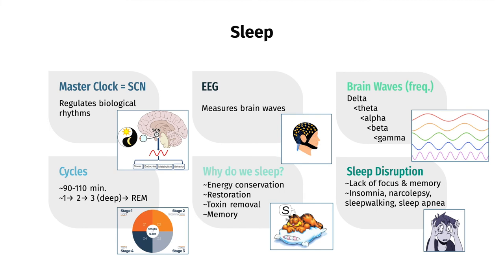The hypothalamus, or more specifically, the suprachiasmatic nucleus, SCN, or master clock, also regulates our biological rhythms such as our sleep and wake cycles. It integrates external input such as light and internal input such as the presence of certain transcription factors and proteins, and tells our body when it's time to be asleep or awake.